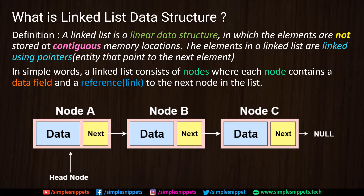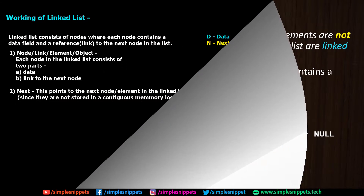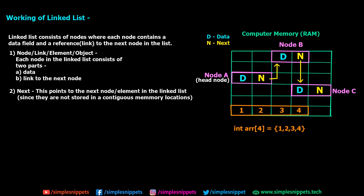To understand linked list in more detail, let's take a comparison between the linked list data structure and arrays, and see what happens behind the scenes — how a linked list would look in memory. On the digital blackboard, we already know a linked list consists of nodes where each node contains a data field and a reference link to the next node. A node can also be referred to as a link, an element, or an object — these are different alias names for the same thing.